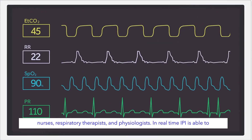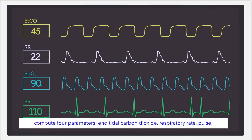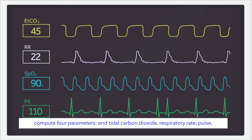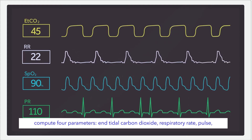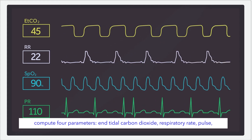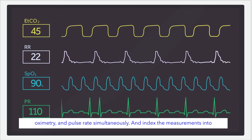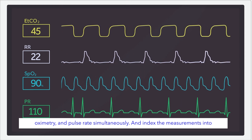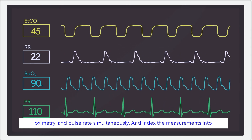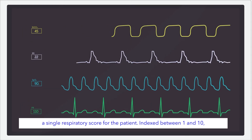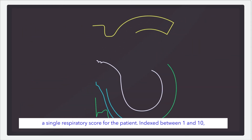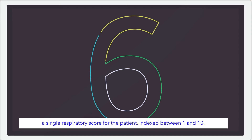In real time, IPI is able to compute four parameters — end tidal carbon dioxide, respiratory rate, pulse oximetry, and pulse rate — simultaneously, and index the measurements into a single respiratory score for the patient.